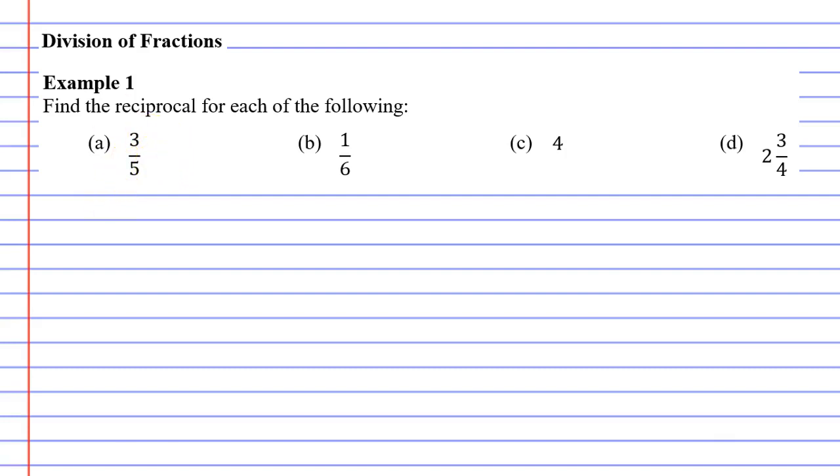Now, when we find the reciprocal, we are simply flipping the fraction, or you could also say that we are swapping the numerator and the denominator. So, if I found the reciprocal for question A, it would simply be 5 over 3. Notice that the 5 and the 3 swapped places. That's all you need to do.